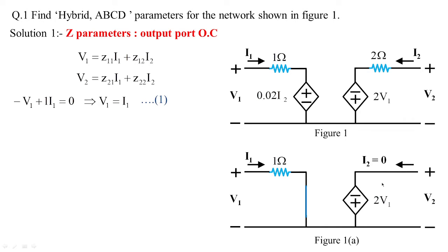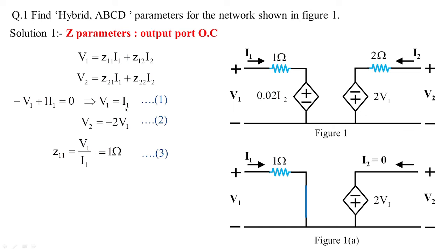Applying KVL at the output port in the anti-clockwise direction gives minus v2 = minus 2v1, framed as equation 2. From these, z11 = v1/i1 = 1 ohm (equation 3), and substituting i1 = v1 into equation 2 gives v2 = minus 2·i1, so z21 = v2/i1 = minus 2 ohms (equation 4). Two z-parameters have been determined.